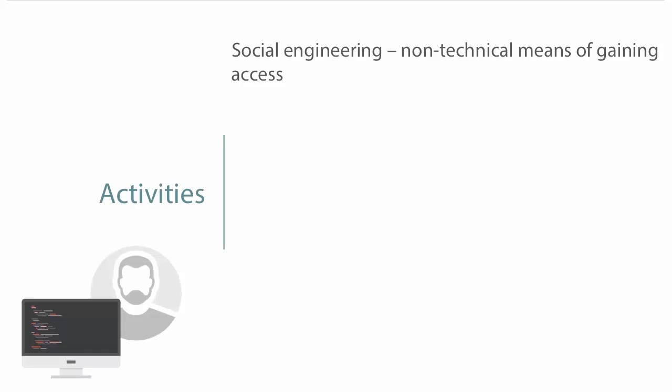Social engineering is where someone can manage to coax or trick somebody into doing something that gives them information they can use, like credentials. As an example, there was a certified ethical hacker who was being paid by a company to execute this attack. He had spoofed the company's internal phone number and used it to make a phone call to the help desk.